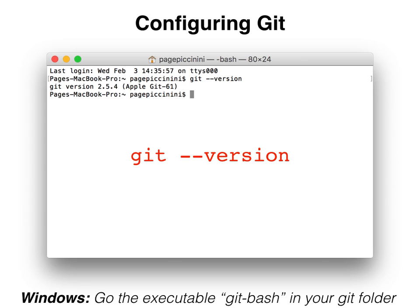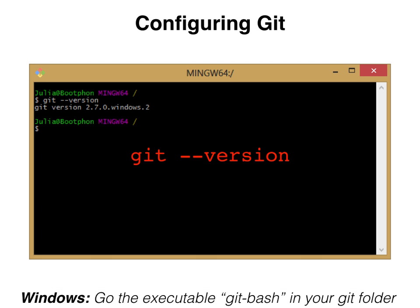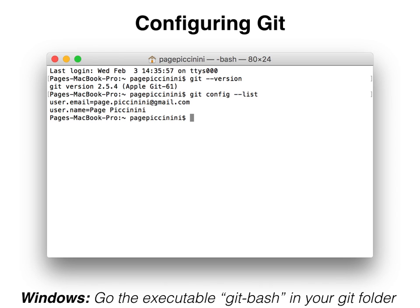If you're using the Windows git bash, you should see something like this, which similarly shows the version for this particular machine. Now that we've confirmed that you do have git installed, we're going to work on configuring git.